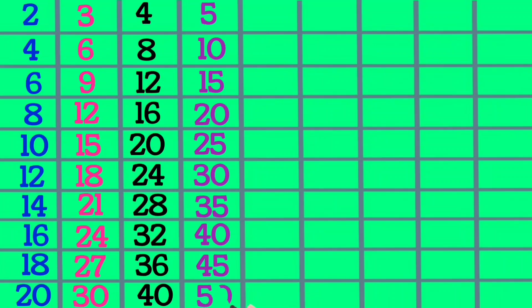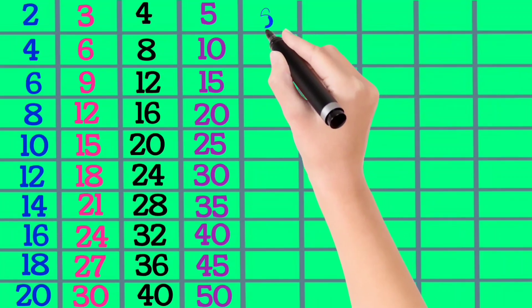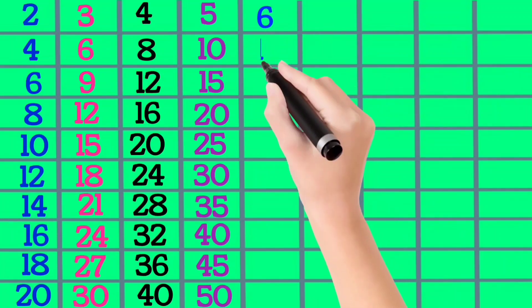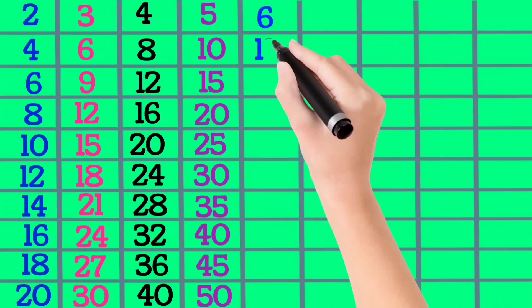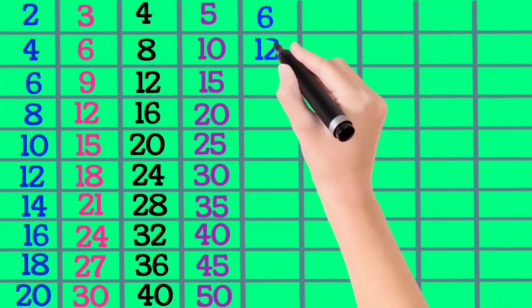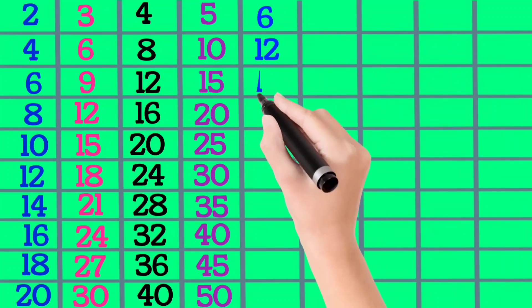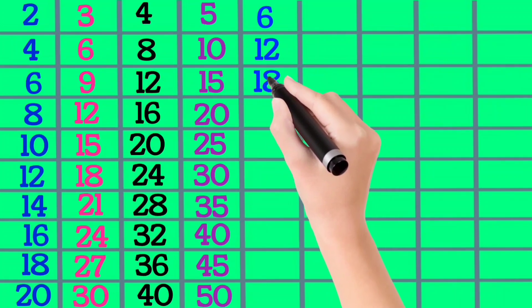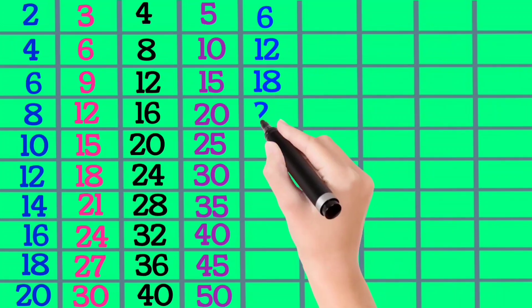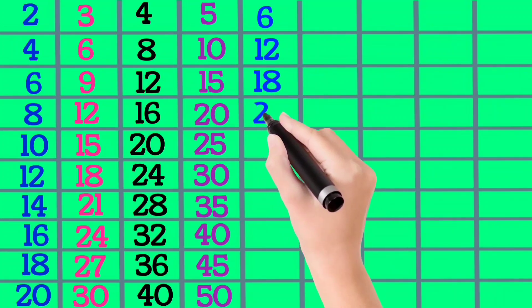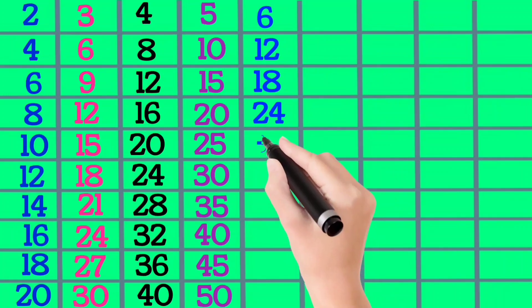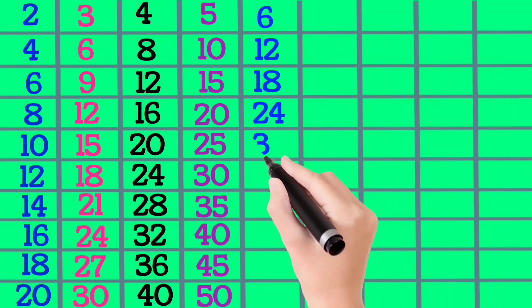6×1 is 6, 6×2 is 12, 6×3 is 18, 6×4 is 24, 6×5 is 30.